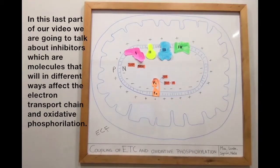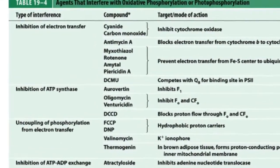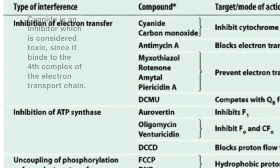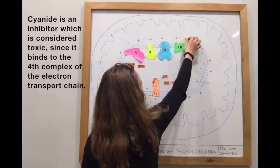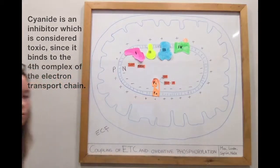In this last part of our video, we are talking about inhibitors, which are molecules that will in different ways affect the electron transport chain and oxidative phosphorylation. As you can see in this table, there are a lot of different inhibitors, but we will talk about cyanide as an example. Cyanide is an inhibitor which is considered toxic since it binds to the fourth complex of the electron transport chain.